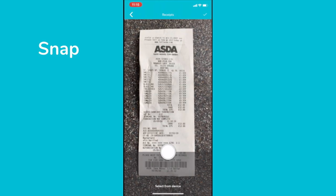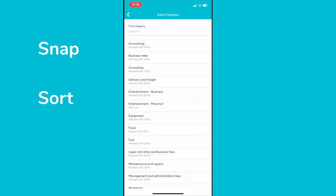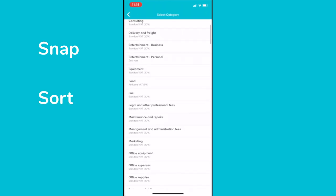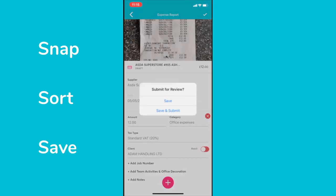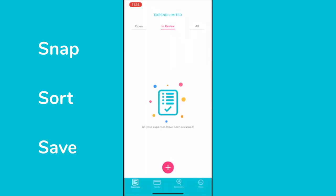When you've made a purchase, simply snap a photo of your receipt. Sort your expense into its category, or perhaps link it to a project or client. Save and submit your expense for review. That's it.